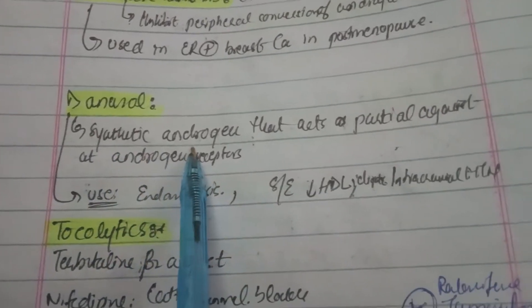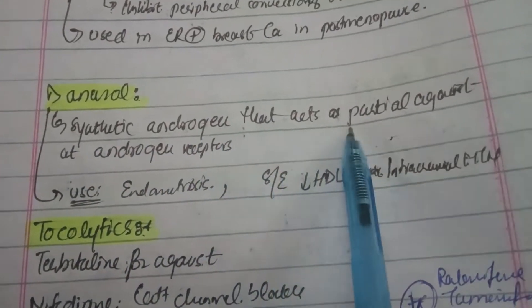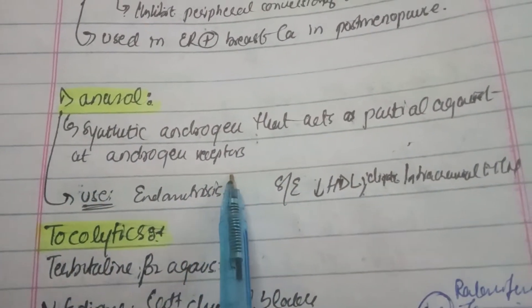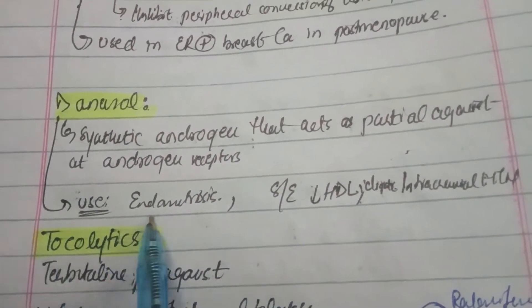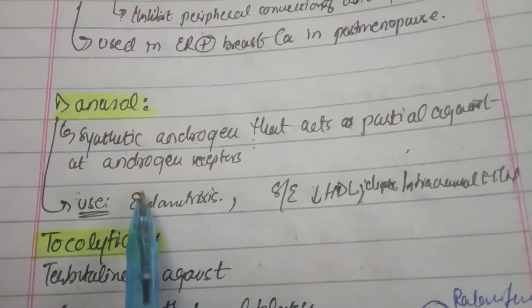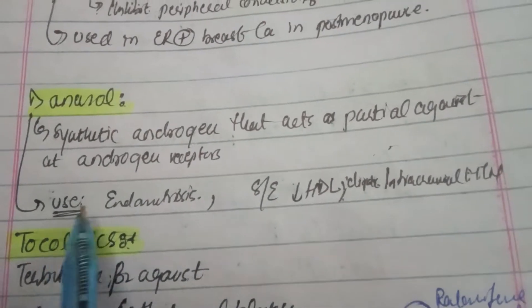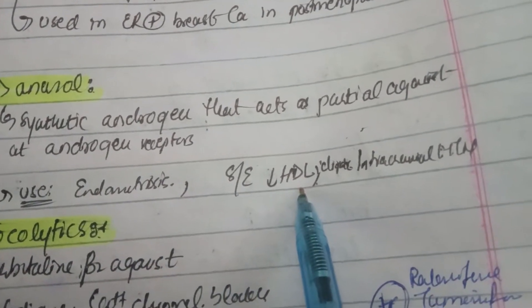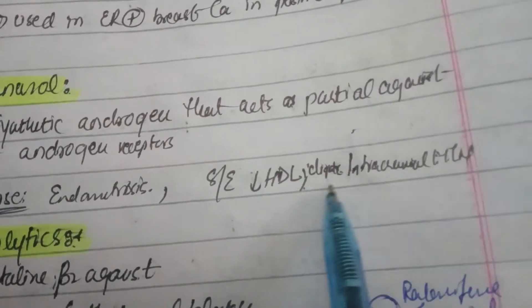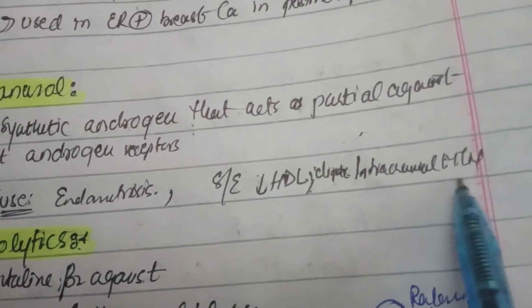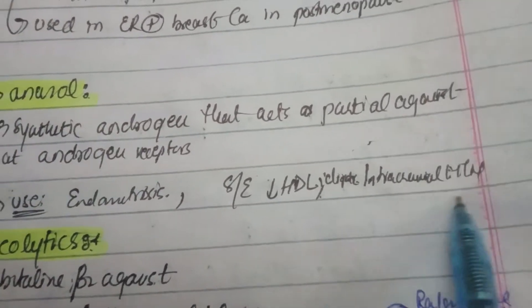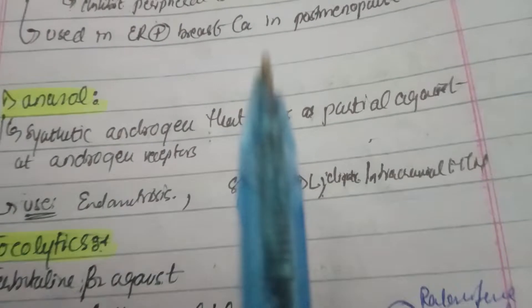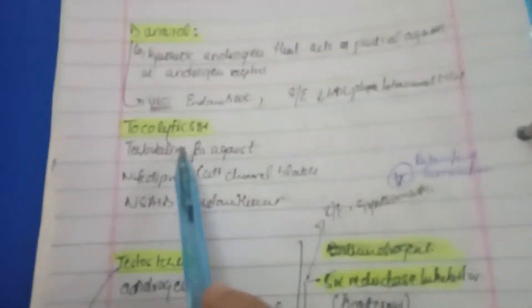Danazol is a synthetic androgen that acts as a partial agonist at androgen receptors. It is used in endometriosis. Its side effects include decreased HDL and idiopathic intracranial hypertension — these are the two common side effects to remember.